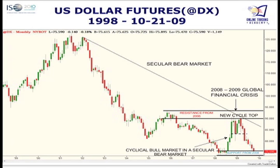I want to show you the first chart we're looking at here — the dollar index, the dollar futures contract from 1999 to October 21st, 2009 — and we have a secular bear market happening here, a nice big long downtrend. However, we also have a cyclical bull market within that secular bear market. This is a monthly chart, so each candle represents a whole month. I've marked off two areas: resistance from the year 2006, and an area of support from 2008. Both of these areas were where prices ended up turning.